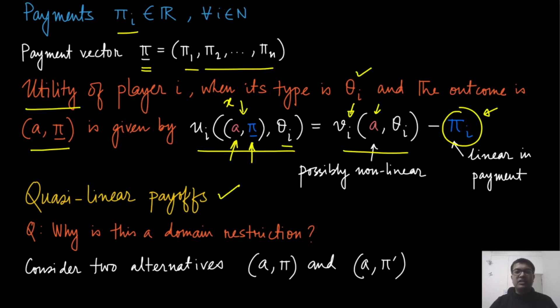And because of this linear, or partly linear, you can see that this expression of utility is linear in the payment term, but it might be non-linear in the allocation term. Therefore, it is called the quasi-linear payoff. So this is the utility that we are going to assume, and we will see that there are quite a few interesting results when we assume this.